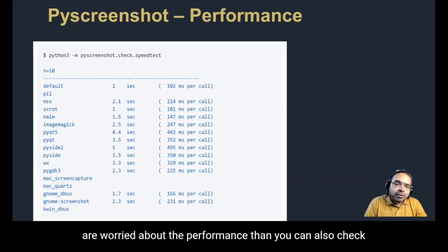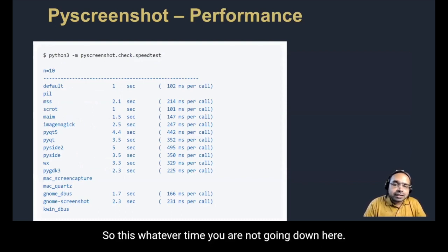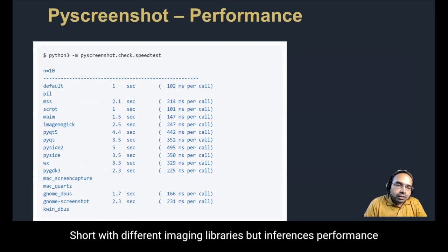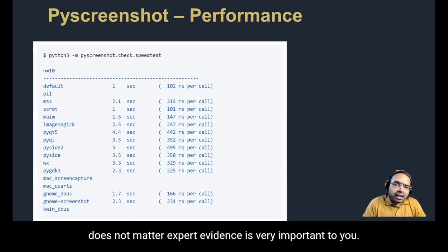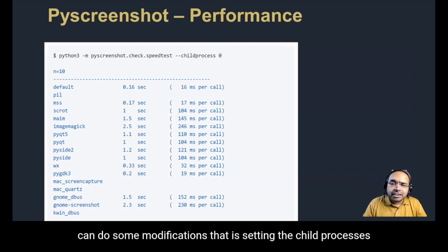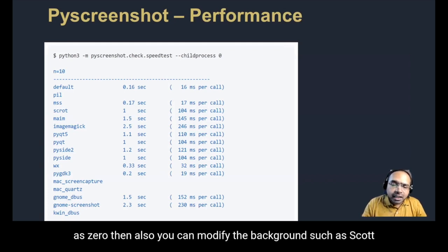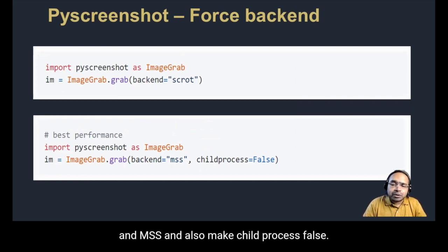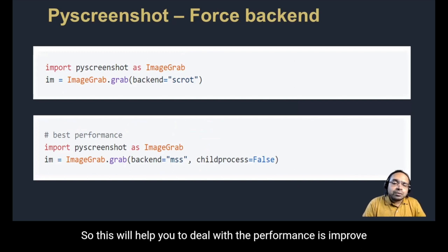If you are concerned about performance, you can check the time taken to capture 10 screenshots with different imaging libraries. However, in forensics, performance does not matter as much — the evidence is what is very important. If you are still interested in performance, you can set the child process to zero, and modify the backend such as scrot or mss, setting child process to False, to improve performance.